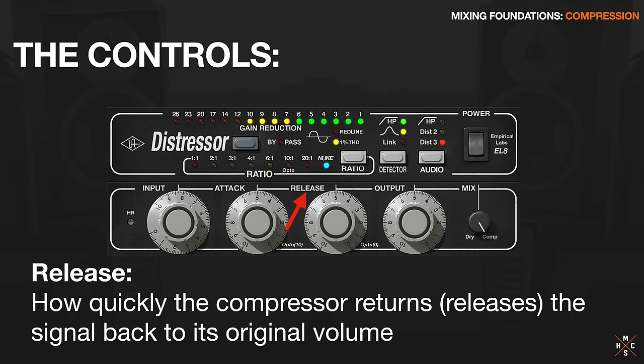After attack, we've got release. Release is just how quickly the compressor returns or releases the signal back to its original volume. A fast release is going to very quickly let the signal go back to its original level after it kicks in - the signal hits the threshold, the compressor kicks in based on ratio and attack time, and then with a fast release it just compresses and gives it right back. Whereas a slow release is going to return the signal to its original level more gradually - it kicks in, it compresses, and then it gently eases the signal back to where it was.